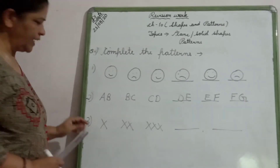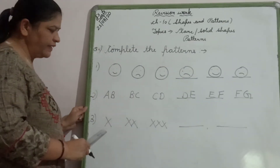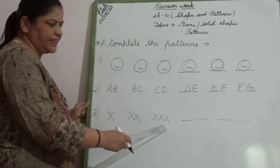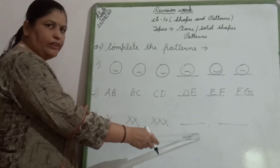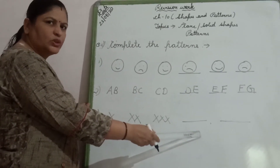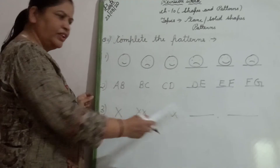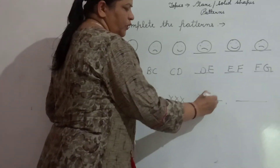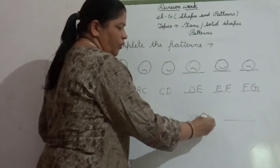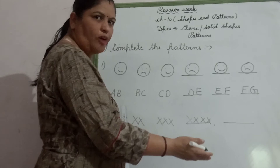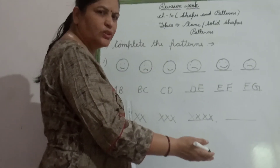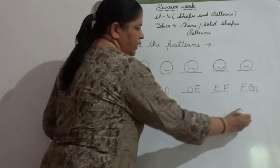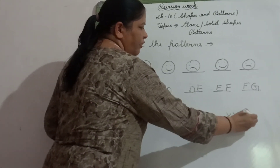The third example: here is one X, here is two X, and here is three X. How many X will you make now? You will make four. Next, how many X will you make? Five. This is the way we have to complete the patterns.